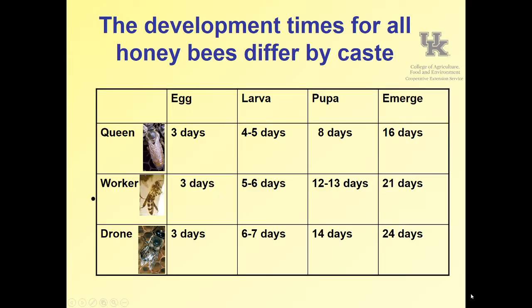Here's a look at the timelines. The honeybees differ as far as their development process. The queen is an egg for three days, a larva for four to five days, a pupa for eight days when she's enclosed, and she emerges after 16 days total. The worker bee has a 21-day life cycle, and the drone has a 24-day life cycle. I guess the drone doesn't get in a hurry to do anything.